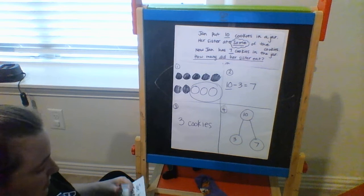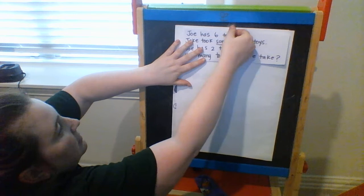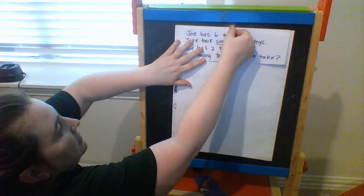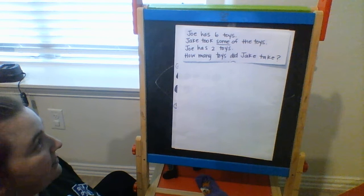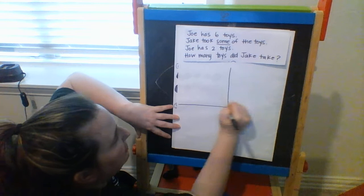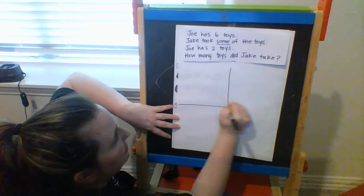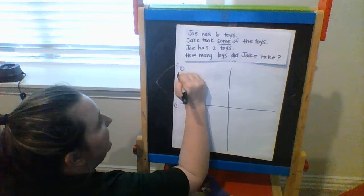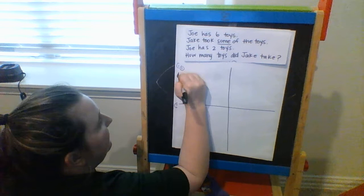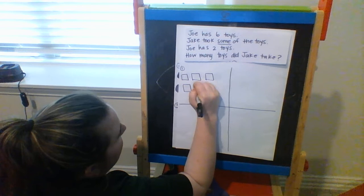We're going to do one more together, and then you're going to show me what you can do. This question says: Joe has 6 toys. Jake took some of the toys. Now Joe only has 2 toys. How many toys did Jake take? There's a lot going on in this problem. I'm going to use my 4 steps to help me solve it. First thing I'm going to do is draw a picture. I'm going to use a simple symbol — this time maybe squares. What I know is Joe has 6 toys, so I'll draw 1, 2, 3, 4, 5, 6. These are the 6 toys that Joe has.